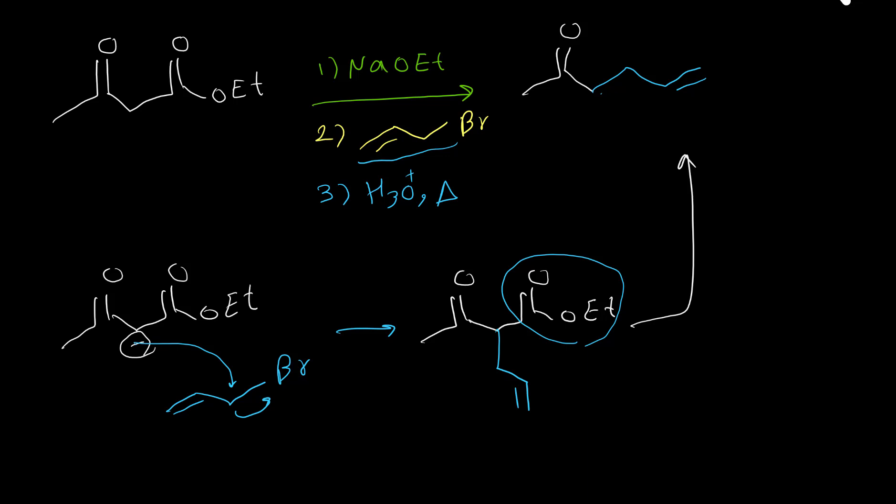We have two acidic hydrogens in acetoacetic ester. So instead of putting one alkyl group, we can repeat this process two times. Let's have an example where we put two alkyl groups on the alpha carbon.